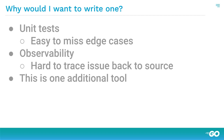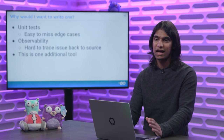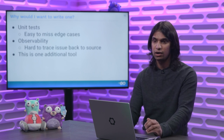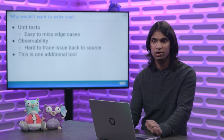An issue related to observability is that it can be hard to trace back an issue to the source in your actual program, because it happened way later when you deployed it. The further along in the pipeline you are, the more expensive it is to fix an issue. So static analysis can be a pretty cost-effective way to catch things earlier. There's something to be said about the work you have to put in to satisfy a static analysis tool, but you should think of it as just one additional thing in your tool belt. If you can write one, it can pay off if you have a bespoke situation on your project that you can't find elsewhere.